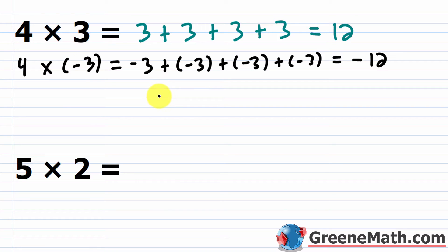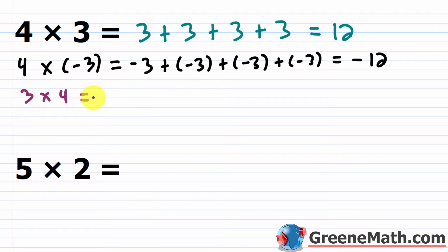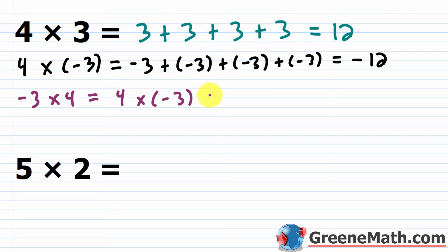It's a little confusing when we go to negative three times four. Using the commutative property, we already know four times three equals three times four. So if I think of three times four, that's four plus four plus four, which is 12. Similarly, negative three times four can be flipped to four times negative three, which gives negative 12.